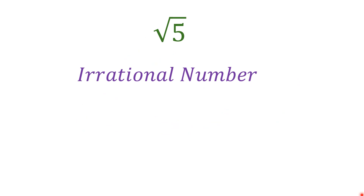Irrational numbers are numbers which you cannot write as a decimal that is terminating — meaning there is an end to the number — or as a decimal that is non-terminating but repeating.